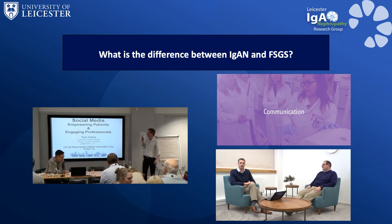As a result of this work, we've generated a series of short videos addressing the common issues that patients have raised when talking to one another on social media. One of these is around communication — myself and Dr Matt Graham Brown, one of our trainees in Leicester, go through the common terminology and jargon used when we talk to patients with kidney disease. One question that came up recently was: what is the difference between IgA nephropathy and FSGS?